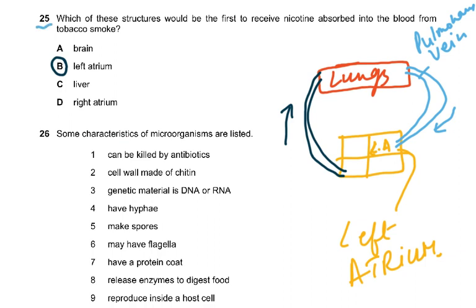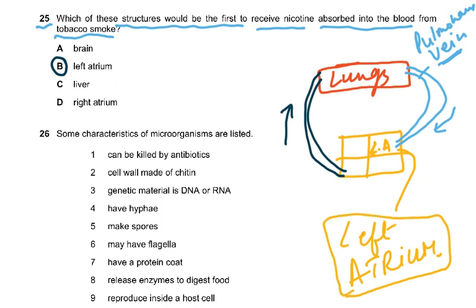Starting with question number 25: which of these structures would be the first to receive nicotine absorbed into the blood from tobacco smoke? When people smoke tobacco they inhale it — it doesn't go into your stomach. So it enters the lungs first, then enters the blood. The vessel which comes out is the pulmonary vein, and this pulmonary vein goes to the left atrium. So the answer is left atrium.